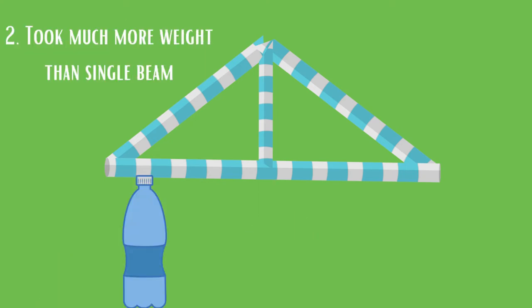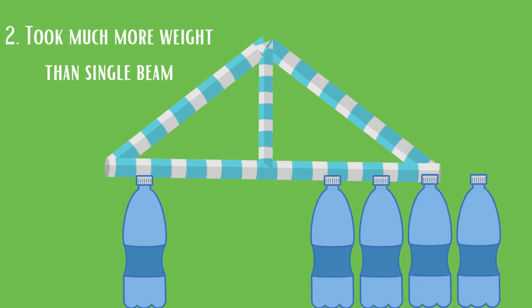Next, we observed that this truss took much more weight than the single beam. Just to provide some perspective, the single straw beam failed at just 700 ml, whereas the truss didn't even move at 2.7 liters.